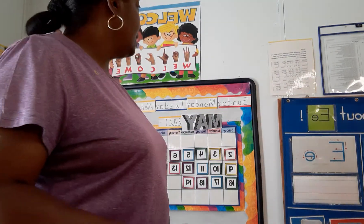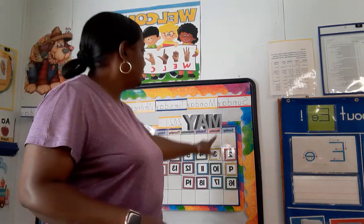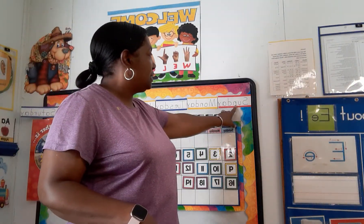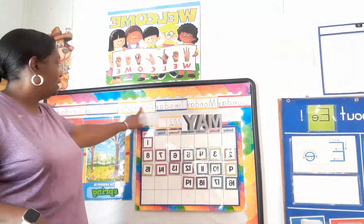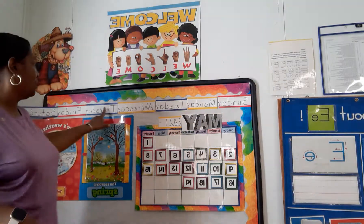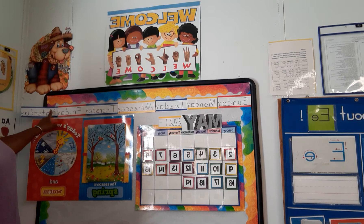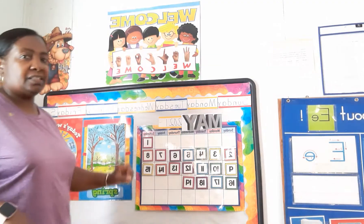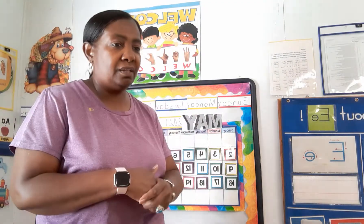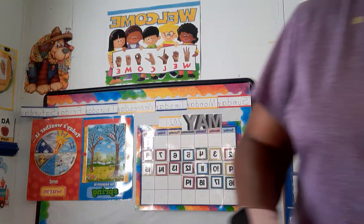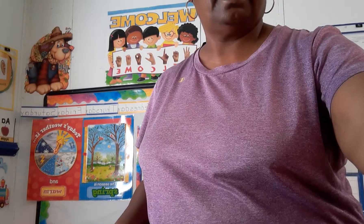Let's go through the days: Sunday, Monday, Tuesday, Wednesday, Thursday, Friday, Saturday. How many days of the week? Seven — there are seven days of the week! I'm going to read you a story in a few minutes, so I'll be right back.